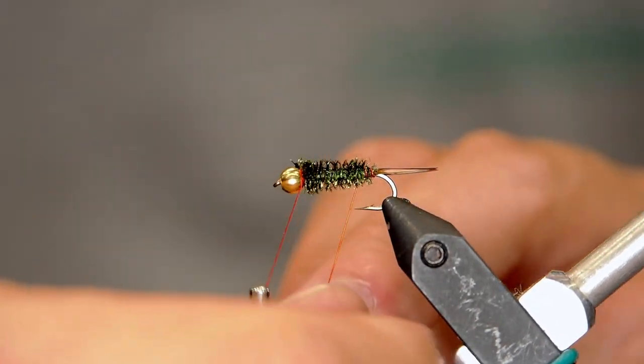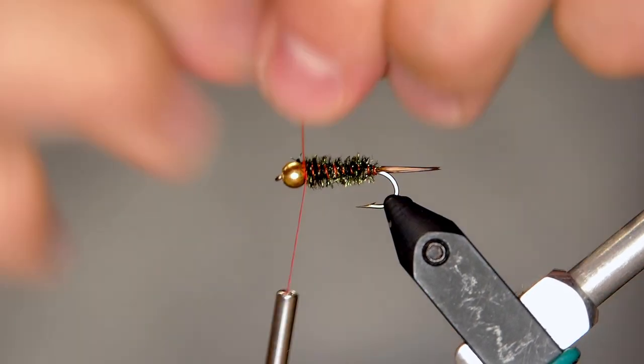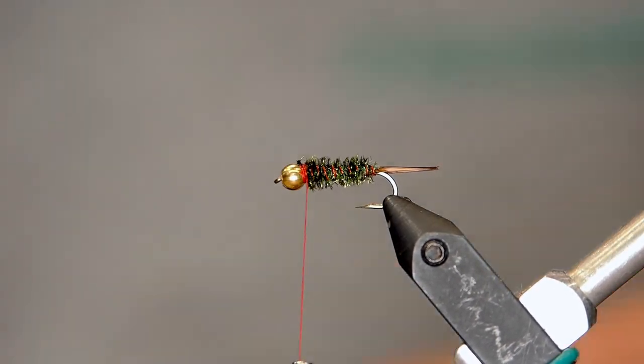Counter wrap now the peacock hurl with that rib. Peacock hurl is delicate. You need that metal rib not only to give it segmentation but to keep it in place when fish bite it.